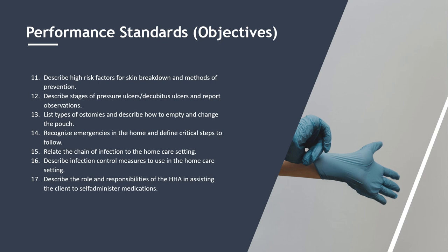Additional objectives include: describe adaptations that can be made in the home for ambulation and positioning; identify the purpose of passive and active range of motion exercises; describe high risk factors for skin breakdown and methods of prevention; describe stages of pressure ulcers and decubitus ulcers and report observations; list types of ostomies and describe how to empty and change the pouch; recognize emergencies in the home and define critical steps to follow; relate the chain of infection to the home care setting; and describe infection control measures to use in the home care setting.